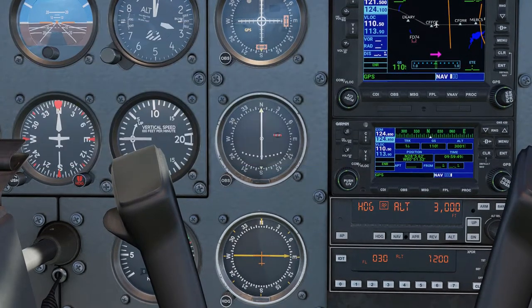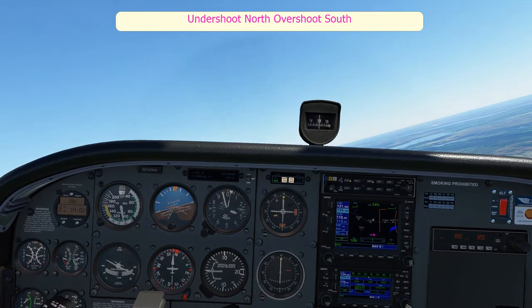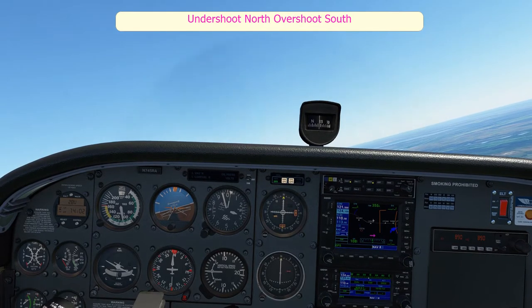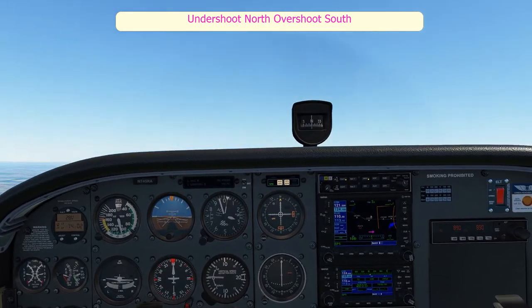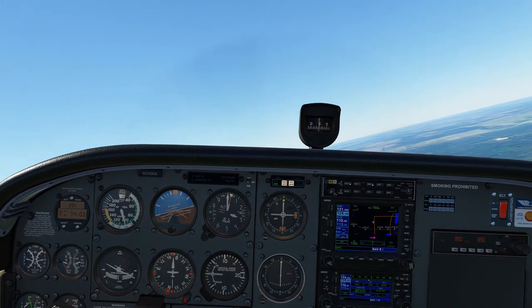We can then apply the principle of undershoot north, overshoot south. So when approaching north, we need to roll out 30 degrees prior to the compass reading north. When approaching south, we need to roll out 30 degrees after the compass has passed through south, in the northern hemisphere.